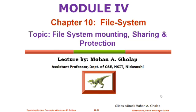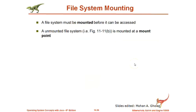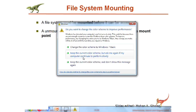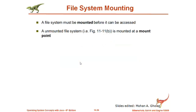Let us continue the discussion of Chapter 10, that is File System. Today we will discuss the topics: file system mounting, sharing, and protection. Whenever a particular file is created, in order to use that file, it should be opened. In the same way, whenever we have a file system and you want to use that file system, first of all it should be mounted. Mounting the file system means enabling that particular file system so that it can be used for the required purpose.